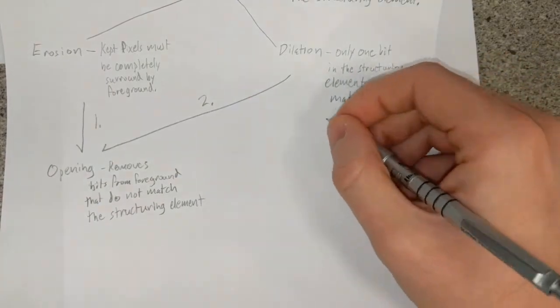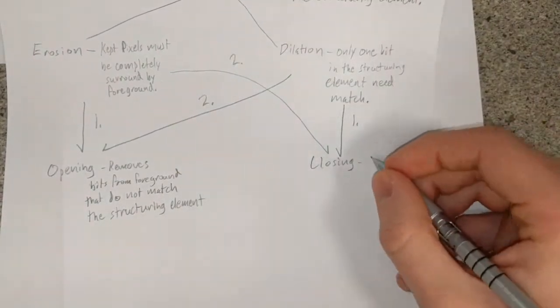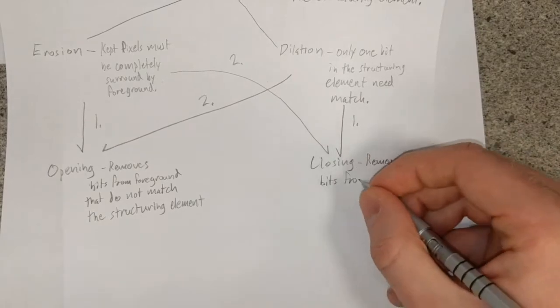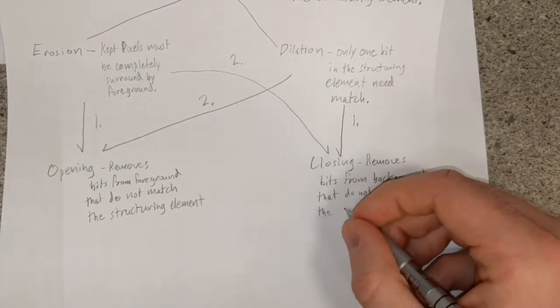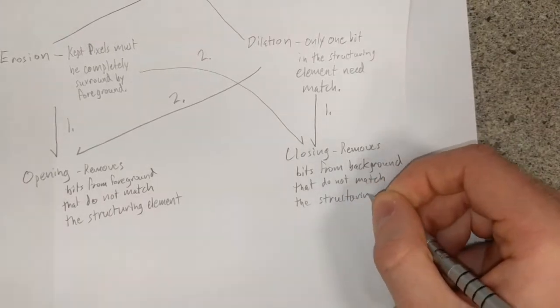Closing an image is the dual of opening. Here, a dilated image is eroded, thereby removing noisy pixels from the background. These two methods form the basis for denoising images using morphological operators.